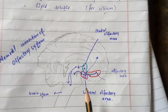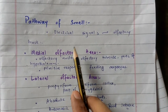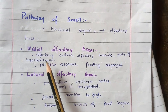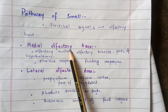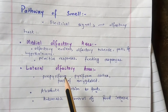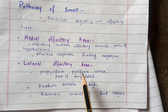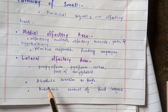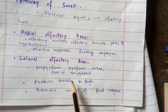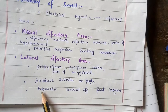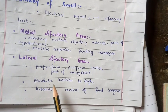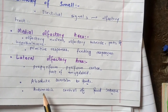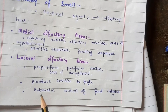In summary, the pathway of smell: electrical signals are sent to the olfactory tract and then to the CNS. The medial olfactory area — olfactory nucleus, olfactory tubercle, and parts of the hypothalamus — is responsible for primitive responses and feeding responses. The lateral olfactory area — prepiriform cortex and part of the amygdaloid nuclei — is responsible for aversion to foods that caused nausea and vomiting, and also provides partially learned autonomic control of food intake and aversion to toxic and unhealthy food.